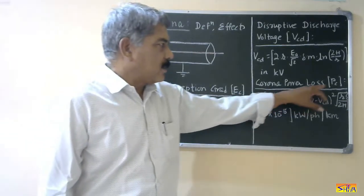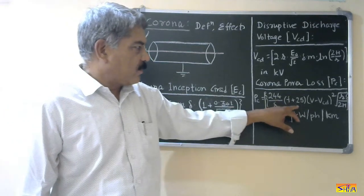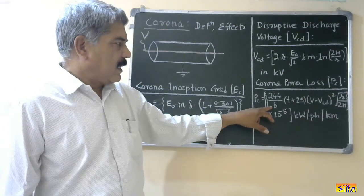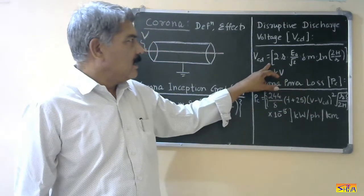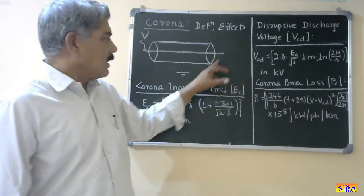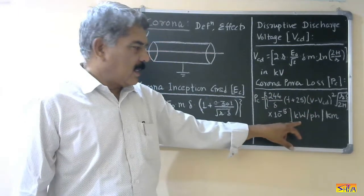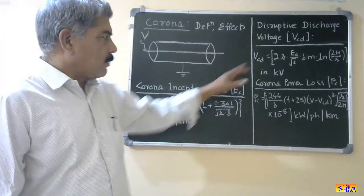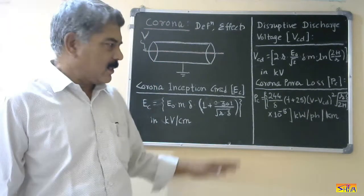The third term is corona power loss, denoted by P_C. The formula is: P_C = (244 / δ) · (f + 25) · (V − V_CD)² · √(r / (2h)) × 10⁻⁵. Here, δ is the air density correction factor, f is the frequency of the supply, V_CD is the critical disruptive discharge voltage, V is the applied voltage, r is the radius, and h is the height of the conductor from the ground. This formula gives the result in kW per phase per kilometer. All three of these formulas — corona inception gradient, disruptive discharge voltage, and corona power loss — are empirical formulas; they are not derivation-based but are statistically determined.